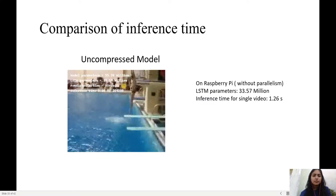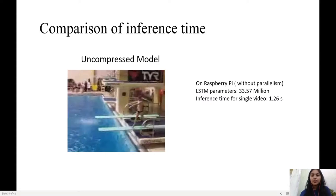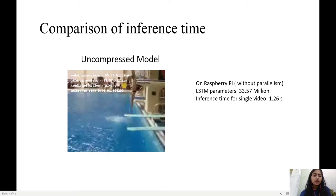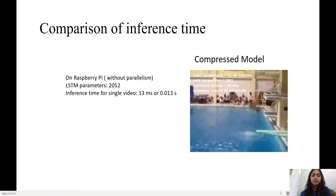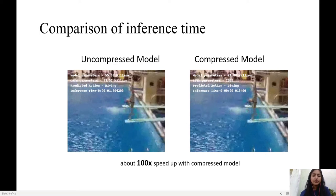We see that for an uncompressed model on Raspberry Pi, it takes 1.26 seconds to infer action from a single video. Whereas a compressed model takes just around 13 milliseconds. Thus, there's a 100x speed up.